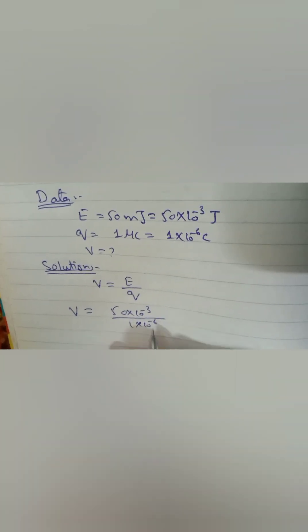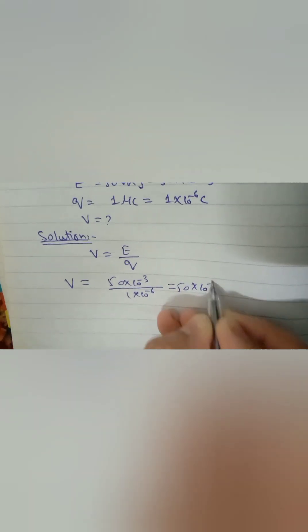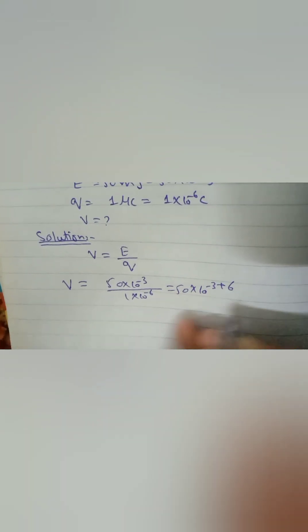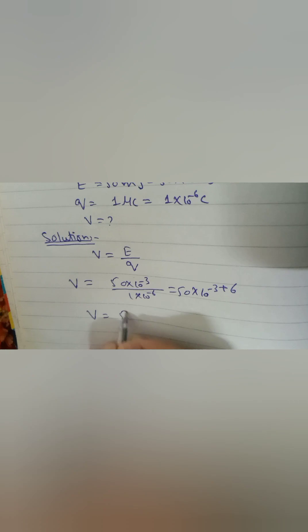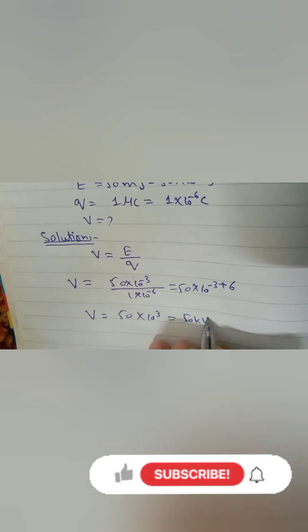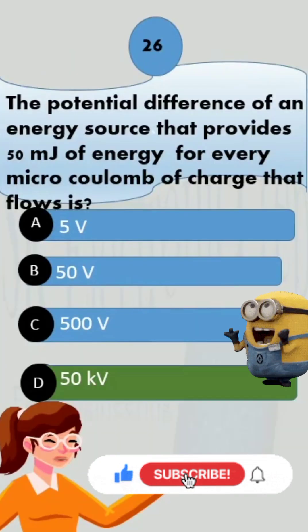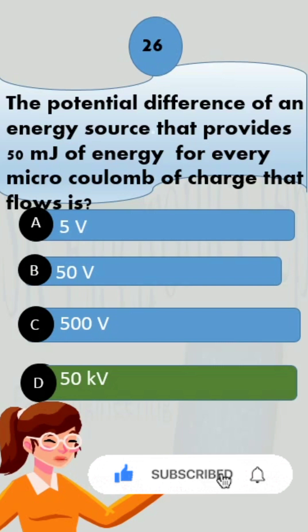50 mJ divided by 1 microcoulomb comes out to be 50 into 10 to the power 3, which is equal to 50 kilovolts. And this is option number D, which is the correct option. Thank you.